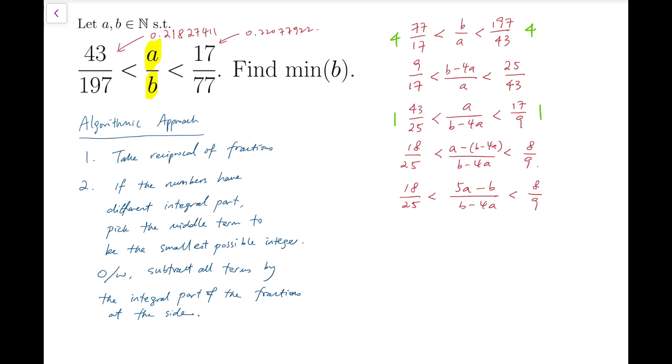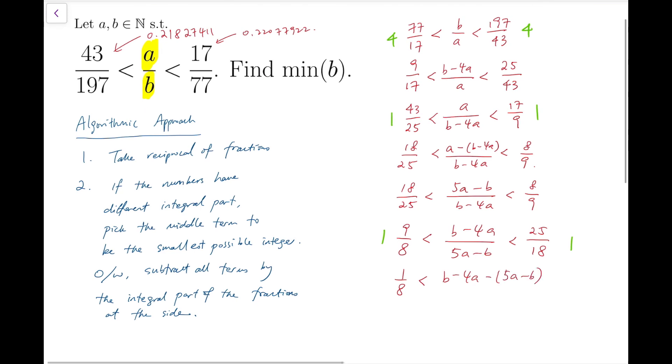And we flip the fractions again. So we have 9 over 8 less than b minus 4a over 5a minus b and it's less than 25 over 18. Now, the integral parts are both 1 again. So we subtract 1 on all fractions and we'll have 1 over 8 smaller than b minus 4a subtracted by 5a minus b over 5a minus b. And this is less than 7 over 18. To simplify, we have 2b minus 9a over 5a minus b and that's less than 7 over 18.